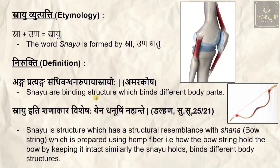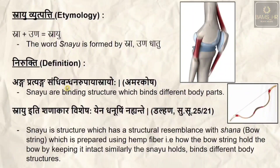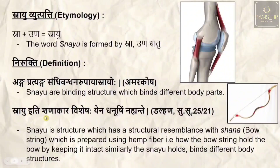Snayu is a binding structure which binds different body parts. The different body parts referred to here are anga, pratyanga, and sandhi — therefore anga pratyanga sandhi bandhana rupayaha snayu.